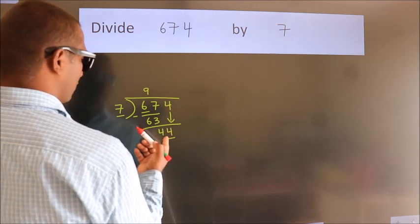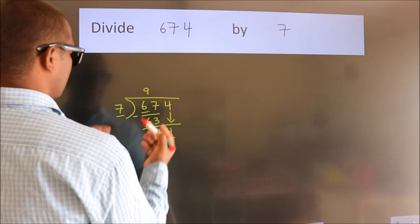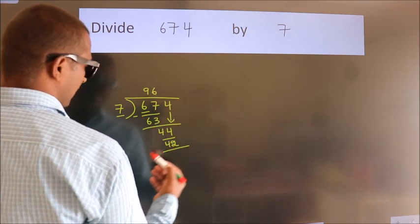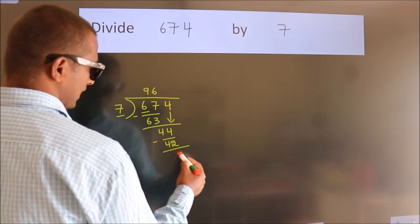A number close to 44 in the 7 table is 7 sixes, 42. Now we subtract. We get 2.